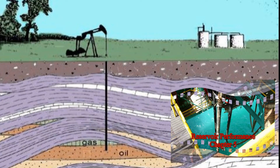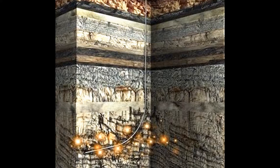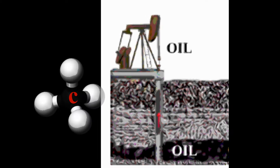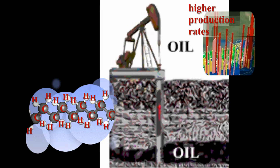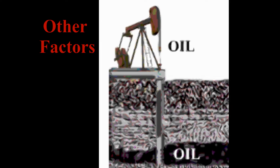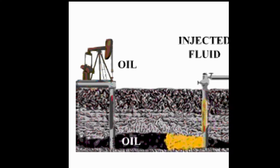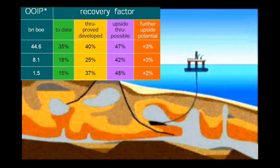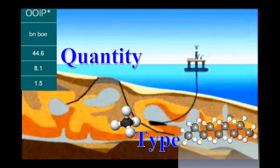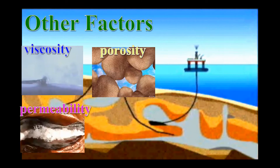If you remember from Chapter 5, present day technology does not allow us to produce 100% of the hydrocarbons found in any given reservoir. For example, lighter hydrocarbons with more hydrogen molecules have higher production rates than heavier ones with more carbon molecules. Other factors affecting the rate of production might include the types of primary drives found in the reservoir, or secondary drives introduced into the reservoir that are used to force the oil to the surface. The final percentage of hydrocarbon retrieval from a particular well and reservoir not only depends on the type and quantity of the reservoir's hydrocarbons, but also on other factors like viscosity, porosity, permeability, and pressure encountered.